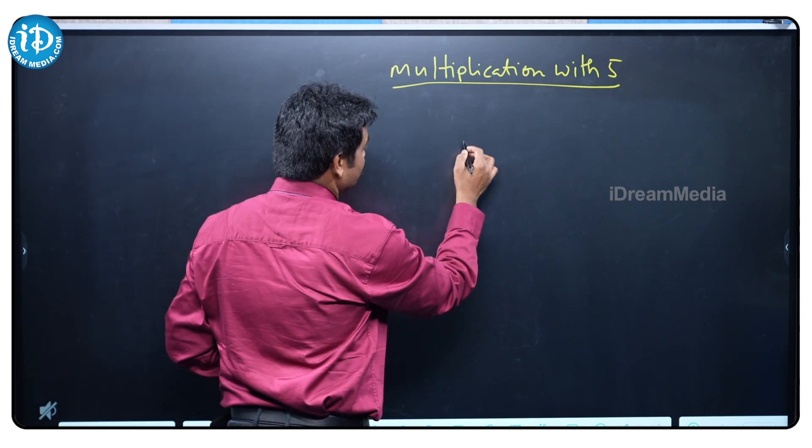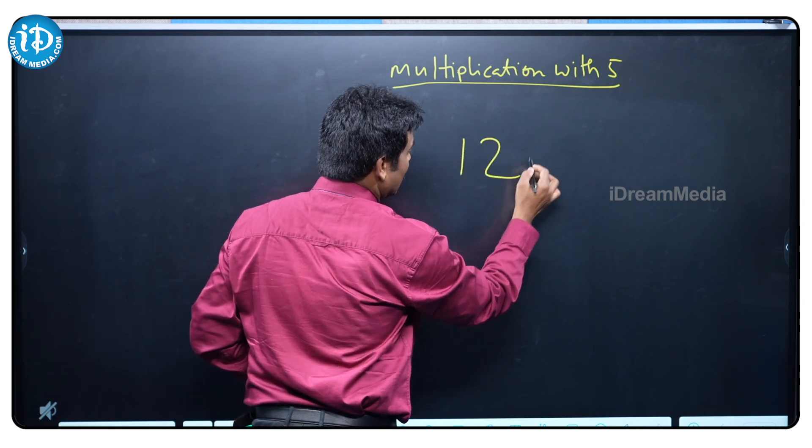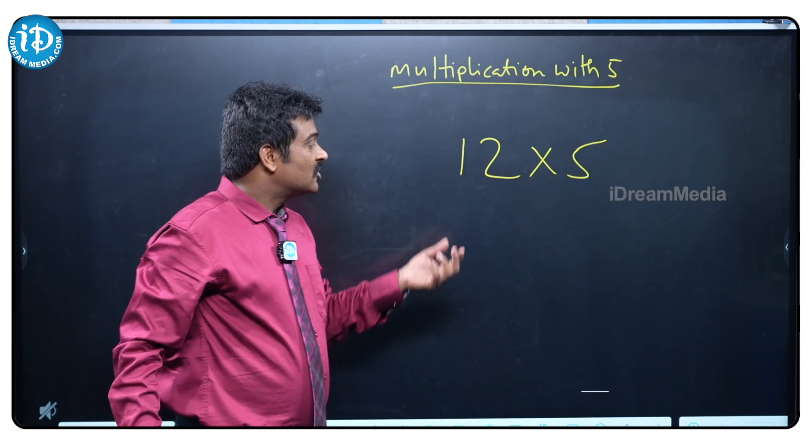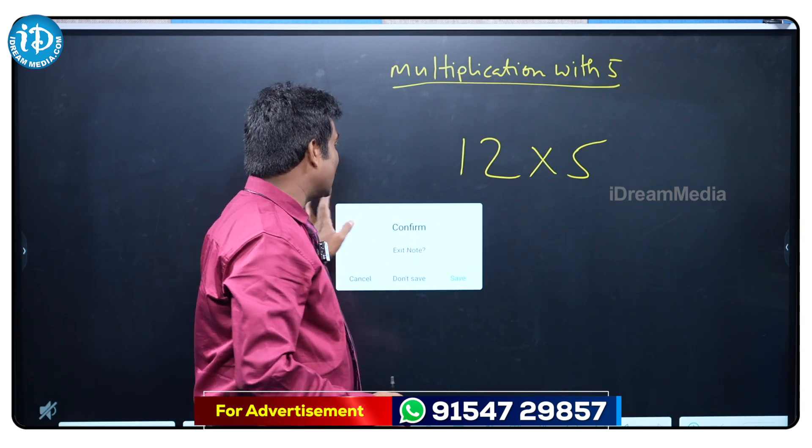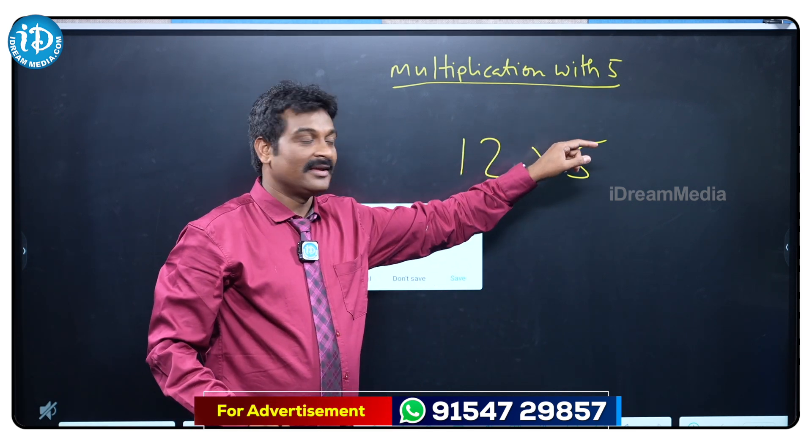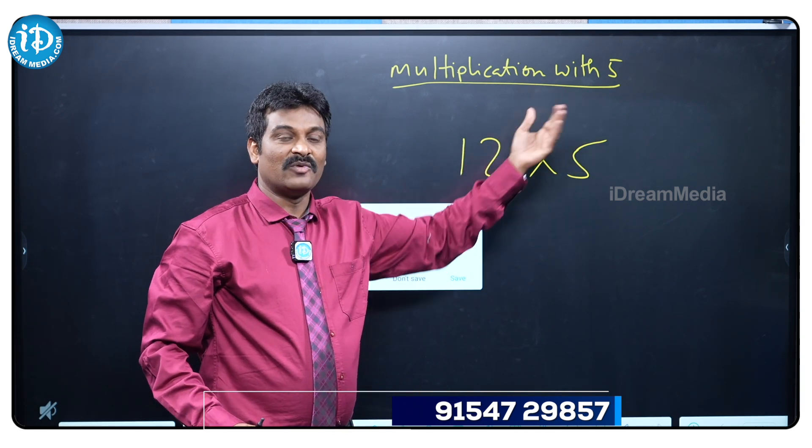Suppose the problem is 12 into 5. Generally we are doing 5 times 2 is 10, write 0, carry 1, 5 times 1 is 5, carry 1. We are doing like that.